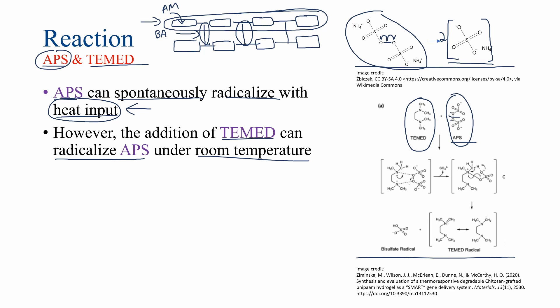This process of radicalizing APS does not happen simply by cutting the oxygen-oxygen single bond — it will take more than that. TIMID, shown to the left, is reacting with APS to the right. The electron pair on the nitrogen of TIMID will react with the oxygen of APS to form a bond. After that, the electrons in the oxygen-oxygen single bond will move to the adjacent oxygen, creating a new chemical structure. Subsequently, an electron from the nitrogen-oxygen single bond will move to the oxygen on what previously used to be APS, and a bisulfate and another electron will move to the nitrogen on TIMID, producing a bisulfate radical as well as a TIMID radical.